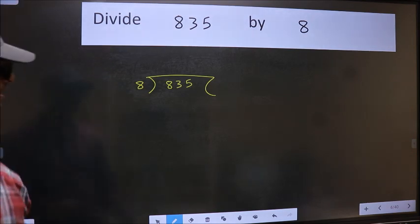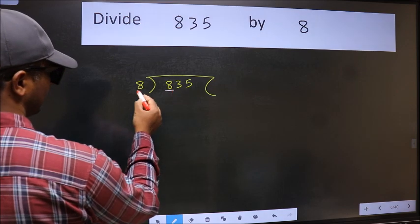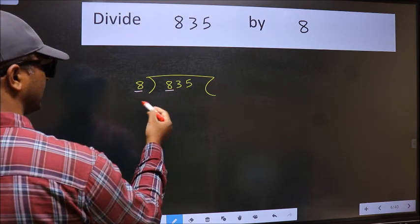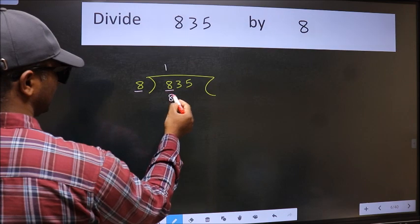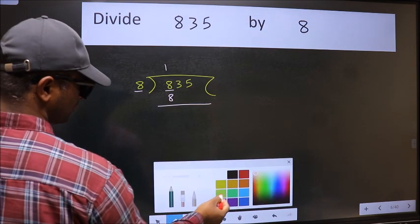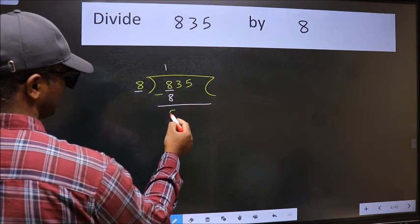Next, here we have 8 and here 8. When do we get 8 in the 8 table? 8 once 8. Now we should subtract. We get 0.